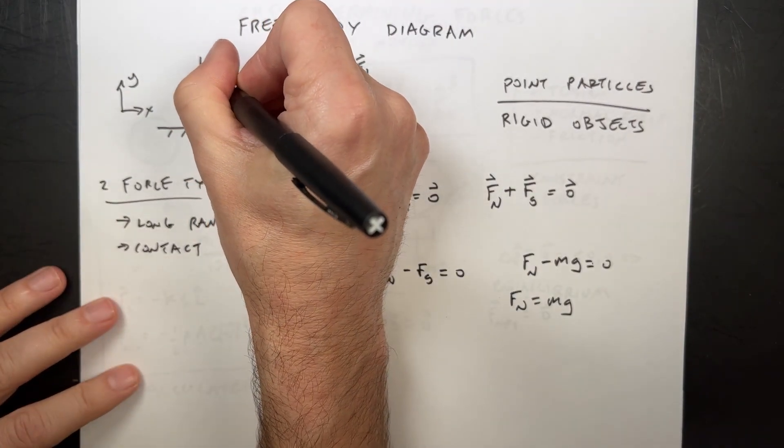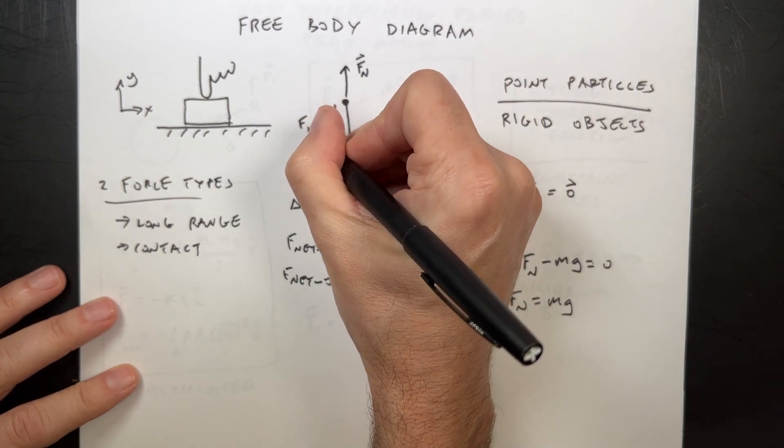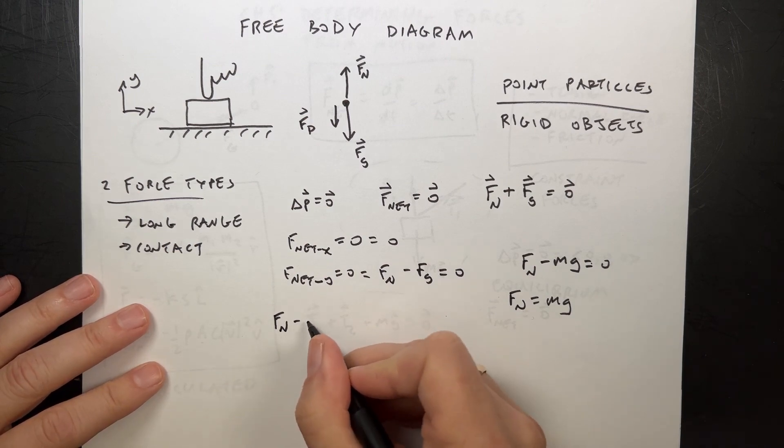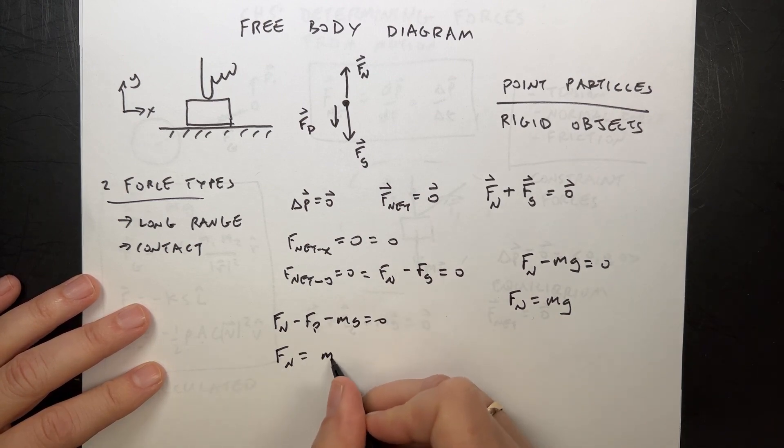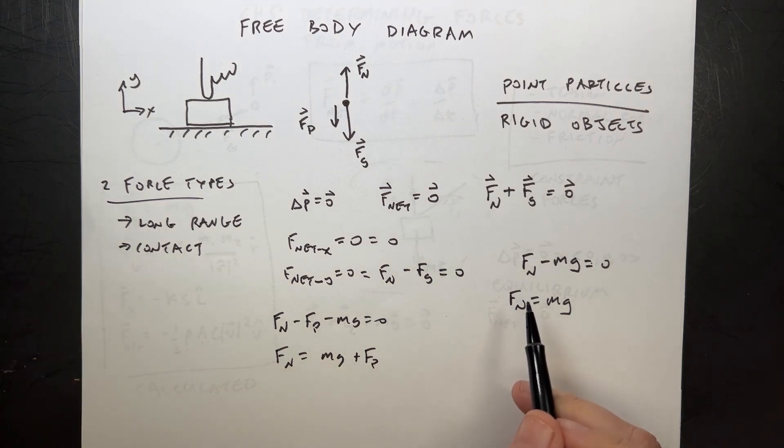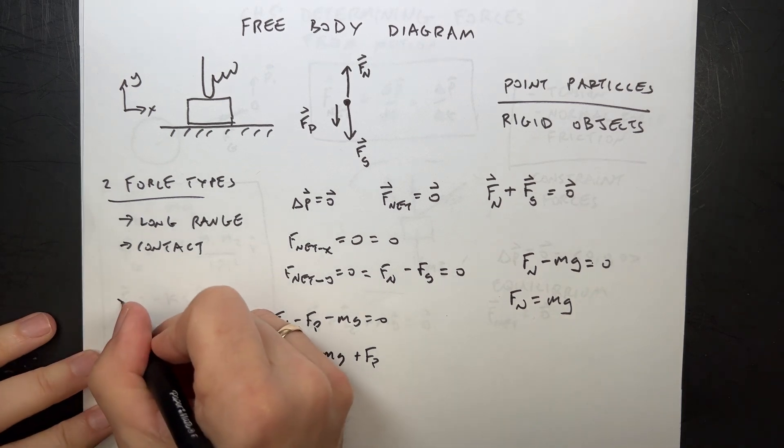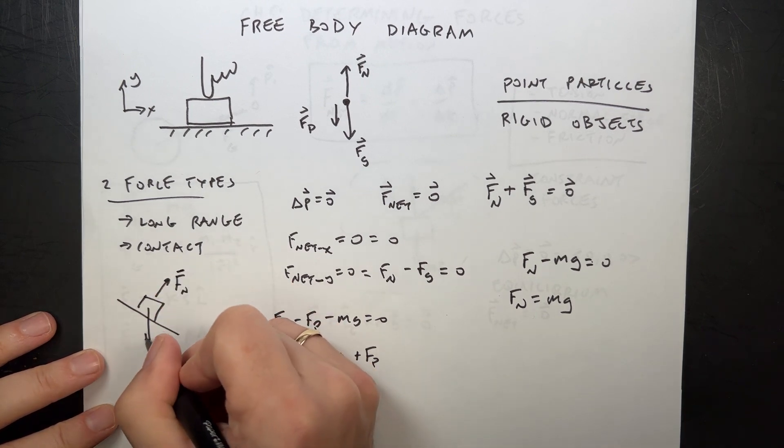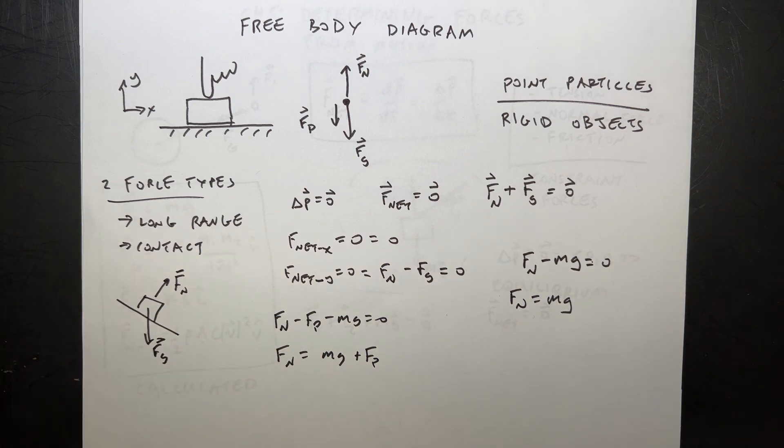Fn, the magnitude is equal to mg. Now, be very careful. That's only true in this case. Because imagine that I push down with my finger. So I have an extra force pushing down Fp. Then in this case, it becomes Fn minus Fp minus mg equals zero. So Fn would be mg plus Fp. So just be careful. This happens a lot, but I want you to be cautious about this thing. Normal force is equal to mg. It's not true also if I have it at an angle like this, because now the normal force is this way and the gravitational force is this way. And they're not equal.